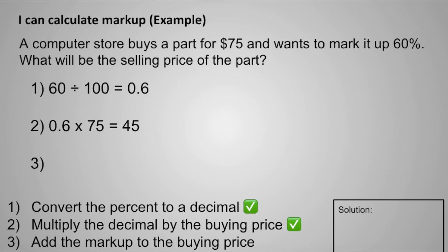And finally, step 3, add the markup to the buying price. $75 plus 45 is equal to 120, so the final price after the markup will be $120.